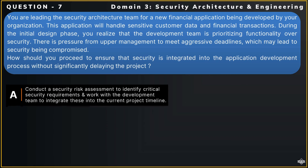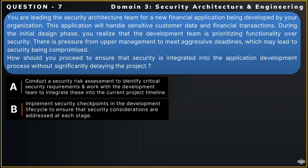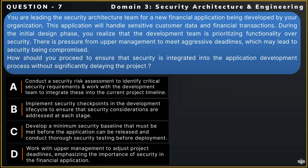Your options are: Option A — Conduct a security risk assessment to identify critical security requirements and work with the development team to integrate these into the current project timeline. Option B — Implement security checkpoints in the development lifecycle to ensure that security considerations are addressed at each stage. Option C — Develop a minimum security baseline that must be met before the application can be released and conduct thorough security testing before deployment. Option D — Work with upper management to adjust project deadlines, emphasizing the importance of security in the financial application.